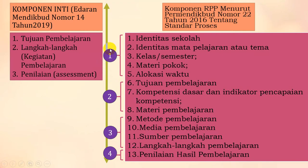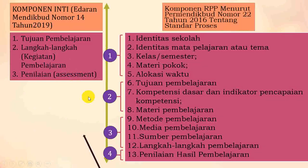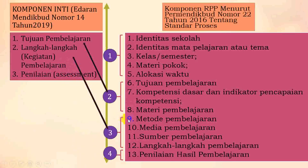Dengan demikian, sebenarnya RPP di Permen 22 yang katanya 13 komponen itu sebenarnya hanya terdiri dari empat komponen: tentang identitas, tentang tujuan pembelajaran, tentang kegiatan pembelajaran, dan tentang penilaian hasil belajar. Dari RPP yang 13 komponen yang dipadatkan bisa jadi empat komponen, dipadatkan lagi oleh Menteri Pendidikan menjadi tiga komponen: yang pertama tujuan pembelajaran (dari komponen 6, 7, 8), langkah-langkah pembelajaran (dari komponen 9, 10, 11, 12), dan assessment atau penilaian (dari komponen ke-13).